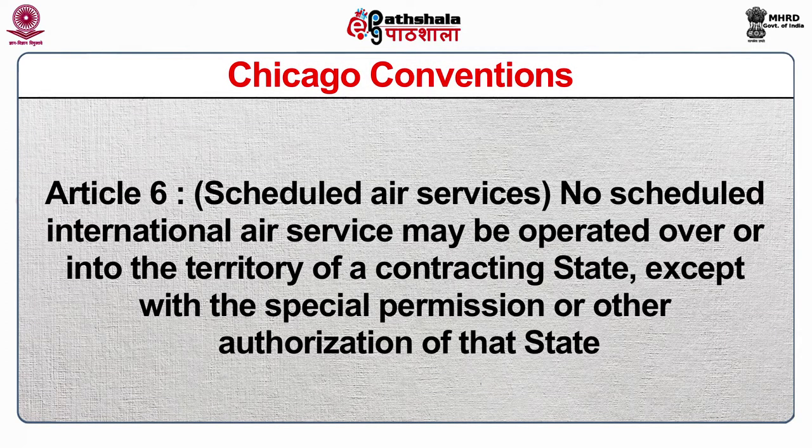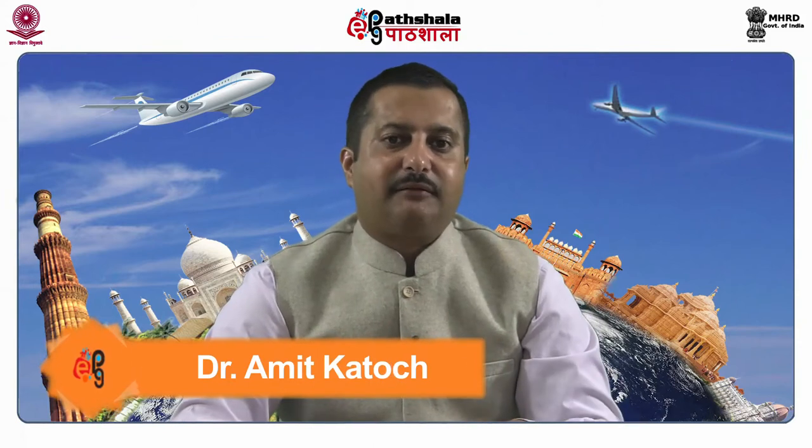Article 6, which is related to scheduled air services, states that no scheduled international air service may be operated over or into the territory of a contracting state except with the special permission or other authorization of that state. Article 10, which deals with landing at customs airports, clearly states that the state can require that landing to be at a designated customs airport, and similarly departure from the territory can be required to be from a designated customs airport. Article 12 states that each state should keep its own rules of the air as uniform as possible with those established under the Convention, and the duty to ensure compliance with these rules rests with the contracting state.